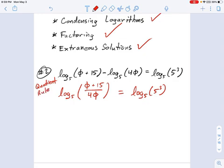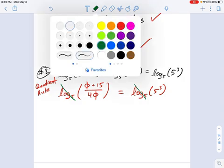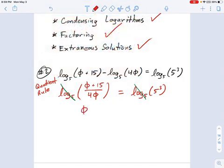And now, since there's an equal logarithm on both sides, it's log base 5 on each of these things, I can actually cancel those out. So what I get after doing that is this simpler equation, 5 plus 15 over 4φ equals 5 cubed.